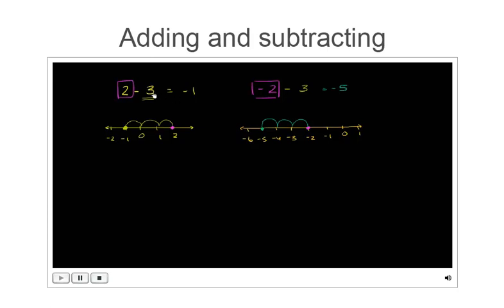Notice that in both situations we subtracted 3 — we moved 3 to the left on the number line. It's just that in the first case we started 2 to the right of 0, and in the second case we started 2 to the left of 0, at negative 2. Let's do another example with these same numbers.